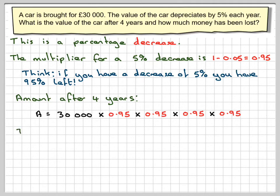But it's better to write it like this: The amount will be £30,000 times 0.95 to the power of 4.